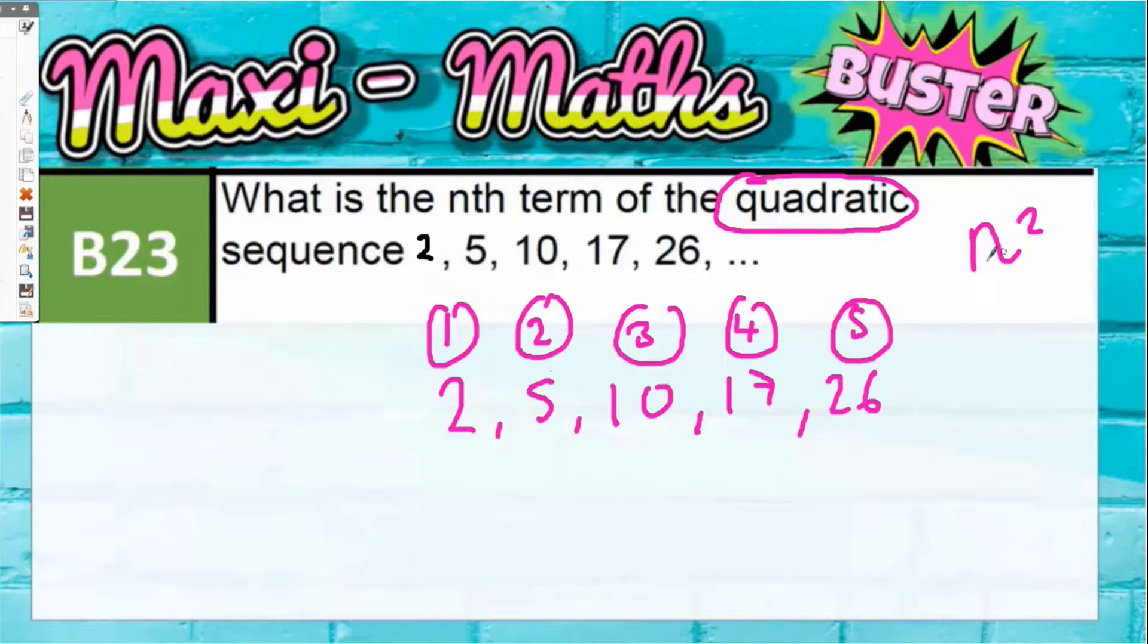We already know it's got something to do with n squared. So if these are the position numbers, let's figure out what n squared would be, since we were told it was quadratic.